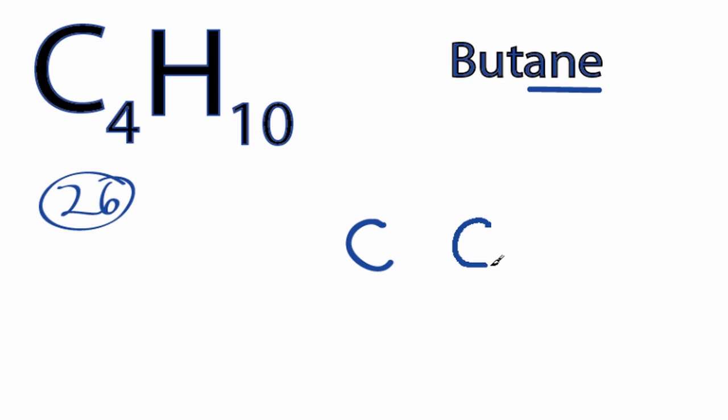We'll put four carbons in a row, and then we'll put hydrogens around them. Because each carbon needs to have four single bonds, each bond having two valence electrons, that'll give it an octet, we'll have three hydrogens on the end carbons and two on the center, like this.